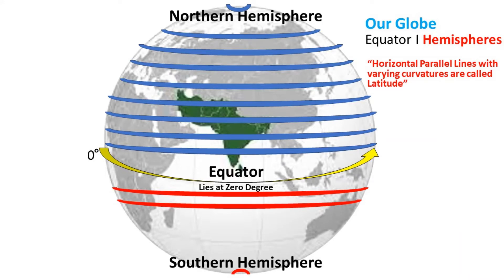Horizontal parallel lines with varying curvatures are called latitudes. Each degree has a latitude — like the equator at zero degrees, then the one degree latitude, two degree latitude, three degree latitude, and so on up to 90 degrees in both hemispheres.